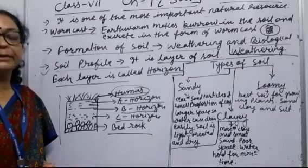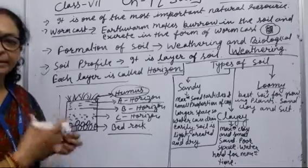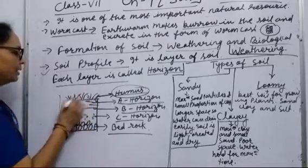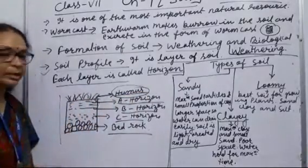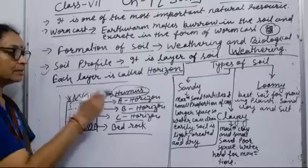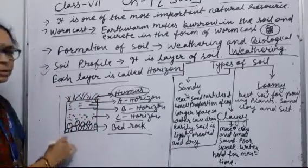And humus is actually the decay product of animal and plant wastage, dead matter of animals and plants, and excretory products. This is very important for soil and this makes the soil very fertile. So this is the soil profile.